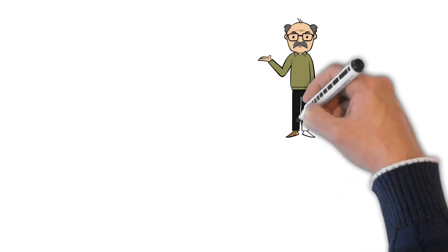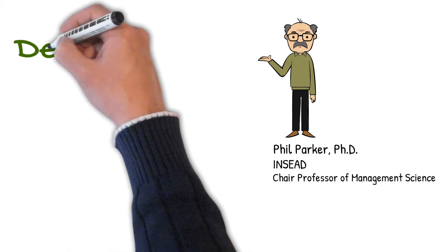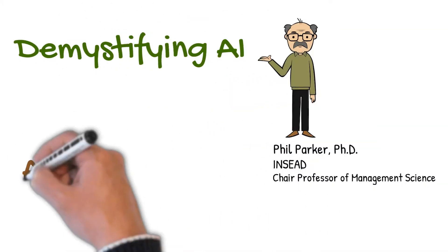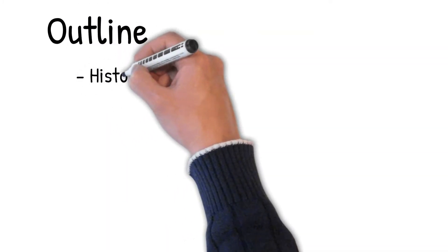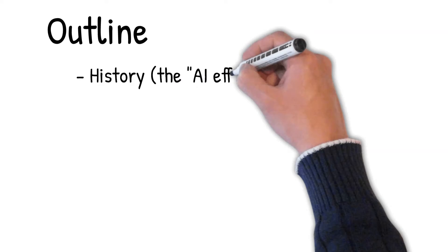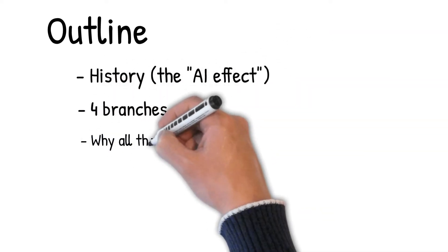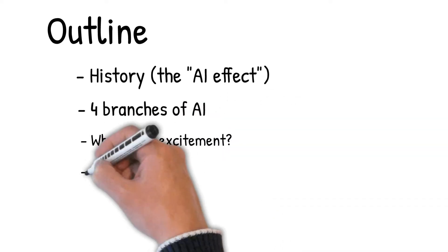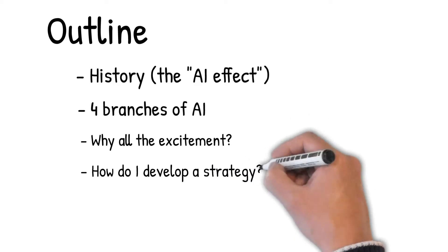Before going into the strategic planning process, I'd like to very briefly give a summary of this field called artificial intelligence. What does it cover and what are the implications for the typical leader? I'll begin by describing the history of artificial intelligence and then four distinct branches. The question then becomes why is everyone so excited about this, and how do I develop a strategy in this space?